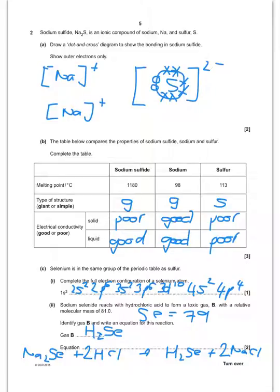So now the properties of sodium sulphide, sodium and sulfur. First of all it gives us some melting points here which gives us some information, but we should really know what these structures are. Type of structure: sodium sulphide of course is going to be a giant ionic structure. Sodium is giant metallic and sulfur is going to be simple molecular. Electrical conductivity of the solid - sodium sulphide ionic as a solid, ions cannot move, so it's poor.